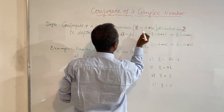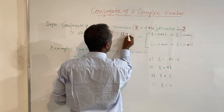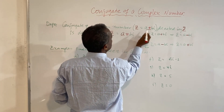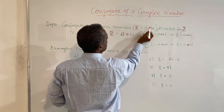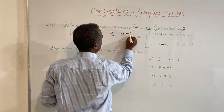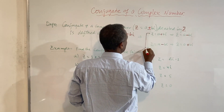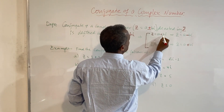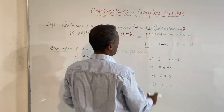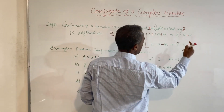So if z equals a plus bi, then z-bar equals a minus bi. And if z equals a minus bi, then z-bar equals a plus bi. We are simply converting the sign of the imaginary part.